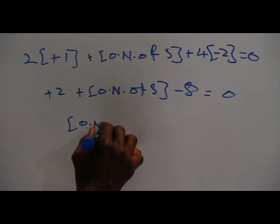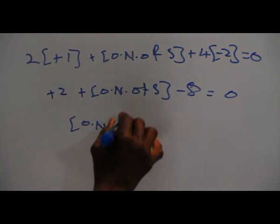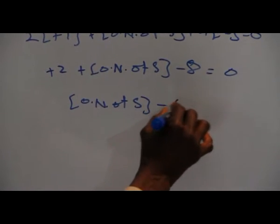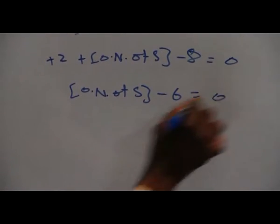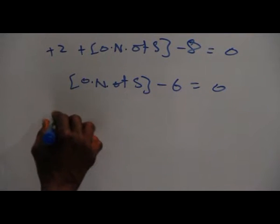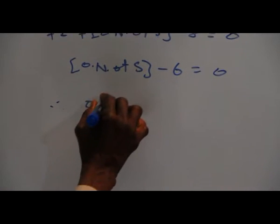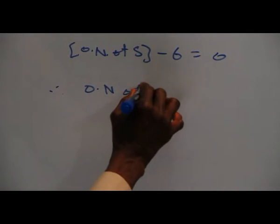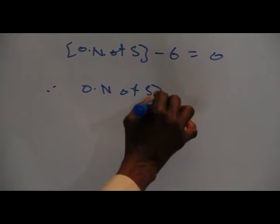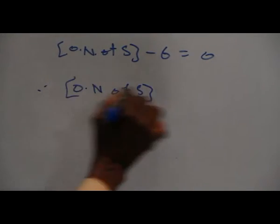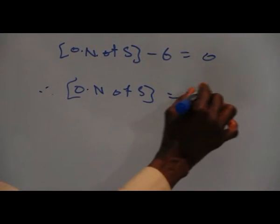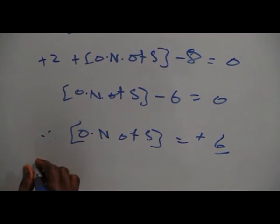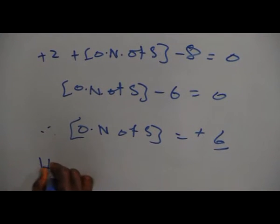Oxidation number of sulfur minus 6 is equal to 0. Therefore, oxidation number of sulfur is equal to plus 6.